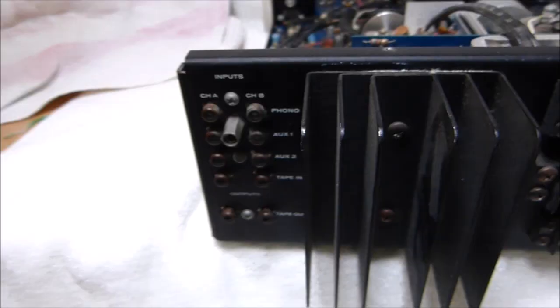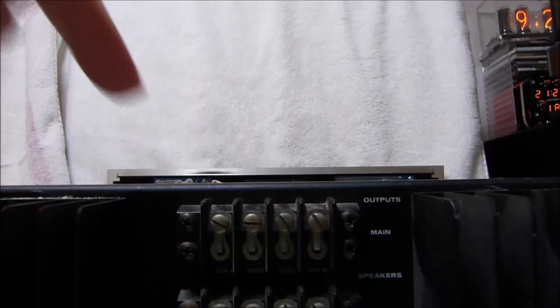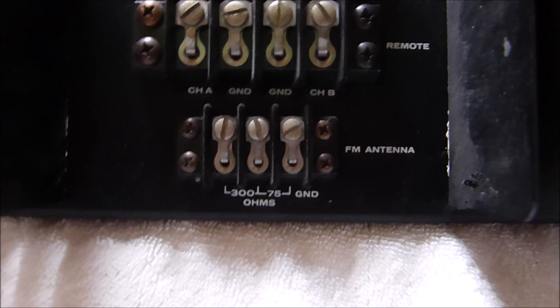Alright, I'm going to turn it around and show you guys the back. So you can see all the inputs now. You've got your phono, aux 1, aux 2, tape in and your tape out. And then here are your connectors for your main speakers and your remote speakers and your FM antenna. I just had a clip lead go into the 300 ohm connection there.